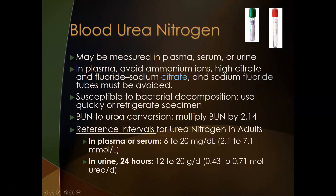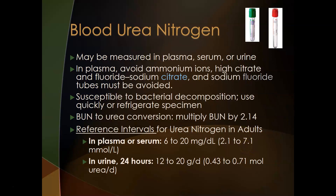While we measure blood urea nitrogen, we are actually assessing urea by measuring the nitrogen content in blood. If you want to know the actual urea concentration based on the BUN level, you take the BUN and multiply it by 2.14.